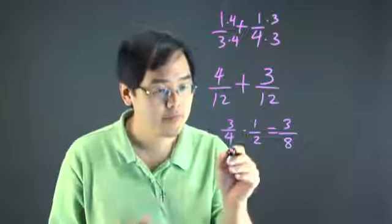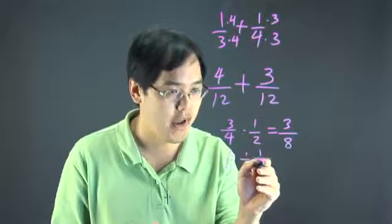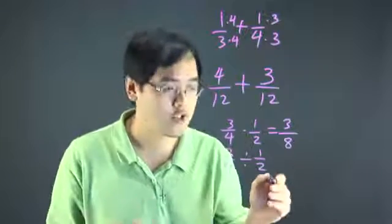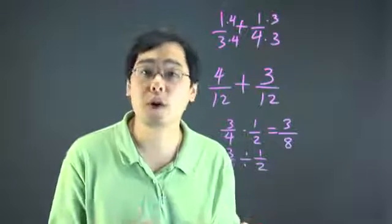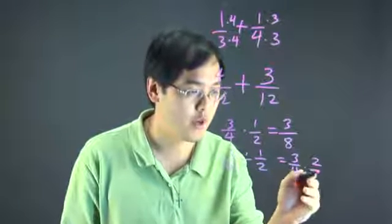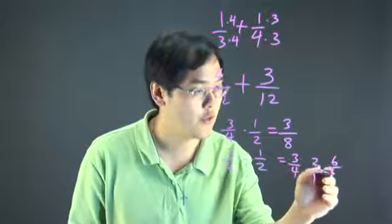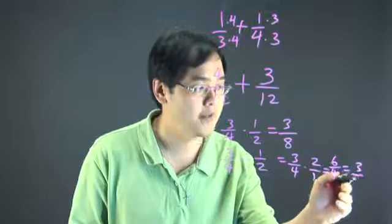With division, if you were dividing 3/4 divided by 1/2, you would flip the fraction. And so the numerator plays an equal part as the denominator. So this will be 3/4 times 2 over 1. And then this will be 3 times 2 is 6 over 4, which is equal to 3/2.